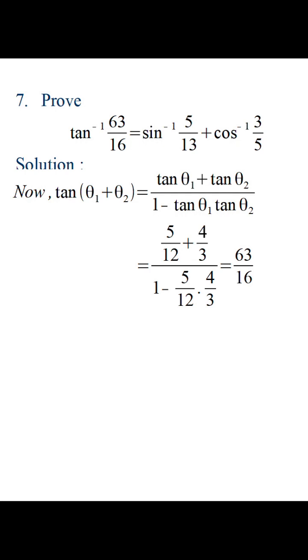Taking tan inverse on both sides we get theta 1 plus theta 2 is equal to tan inverse of 63 by 16. Theta 1 and theta 2 we can substitute from our assumption to get tan inverse 63 by 16 is equal to sin inverse 5 by 13 plus cos inverse 3 by 5.